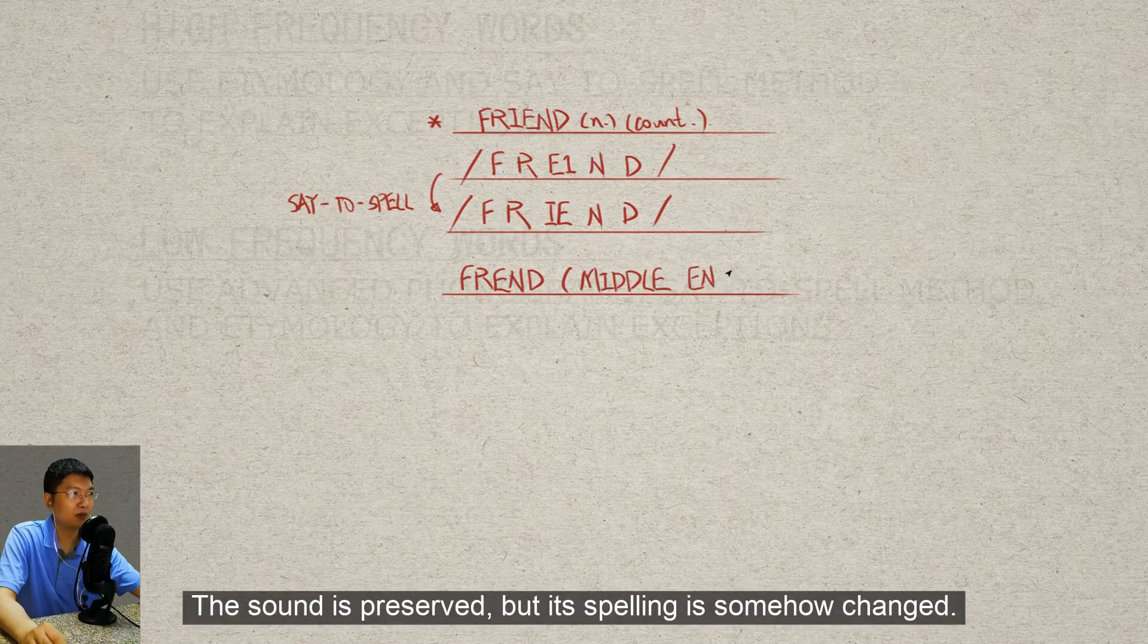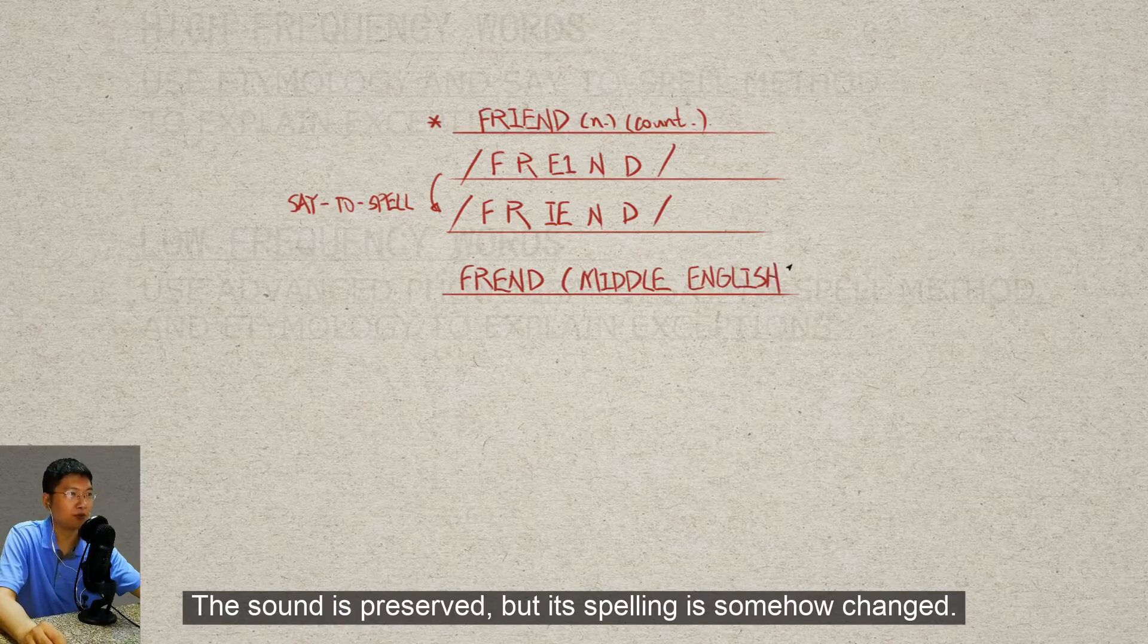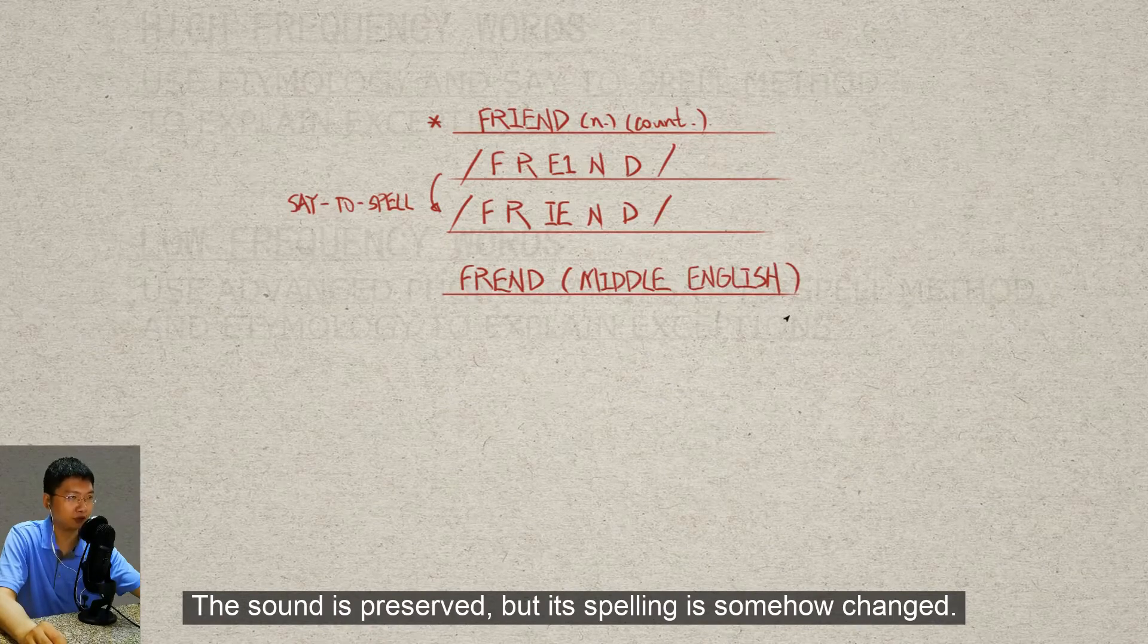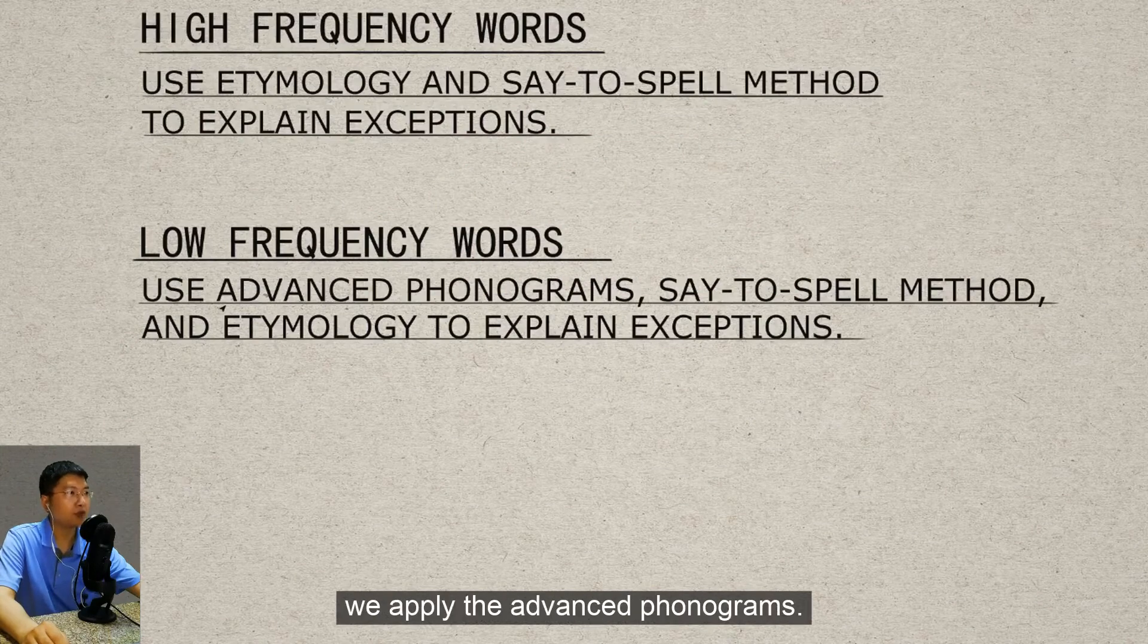A possible spelling of the word 'friend' in the Middle Ages is F-R-E-N-D. It could have been pronounced as 'frend'. The sound is preserved, but the spelling is somehow changed.